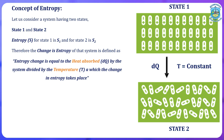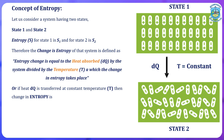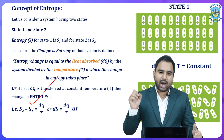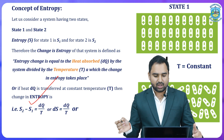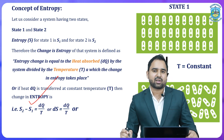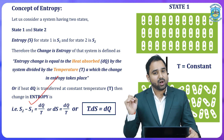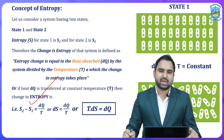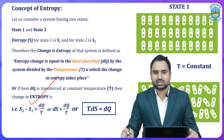If heat dQ is transferred at constant temperature T, then the change in entropy is S₂ minus S₁, which equals dQ divided by T, where dQ is the heat absorbed and T is the constant temperature, and S₁ and S₂ are the entropies of states 1 and 2 respectively. We represent this as dS = dQ/T, or mathematically, T·dS = dQ. This is also termed the second law of thermodynamics in terms of entropy, and it is the most significant formula in thermodynamics when discussing thermodynamic properties and potentials.